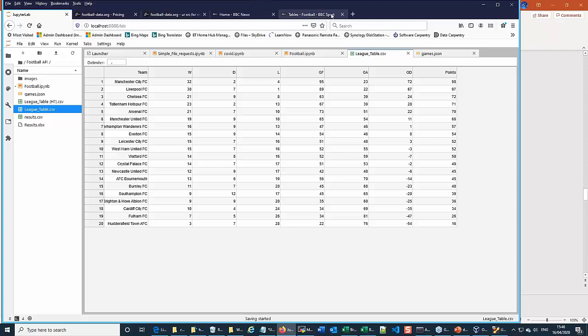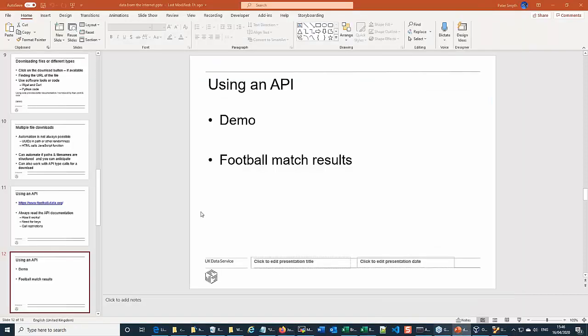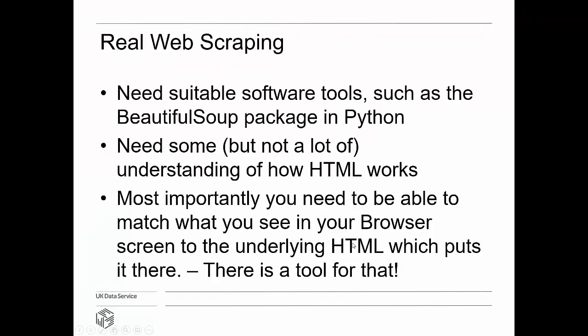Finally, real web scraping — this is where it gets a little bit trickier. We need suitable tools. In Python we have a package called Beautiful Soup, installed as part of Anaconda. You need to know a little bit about how HTML works, but not a great deal. The most important thing is being able to match up what is on the screen with the underlying HTML using the inspector, as I've already shown.